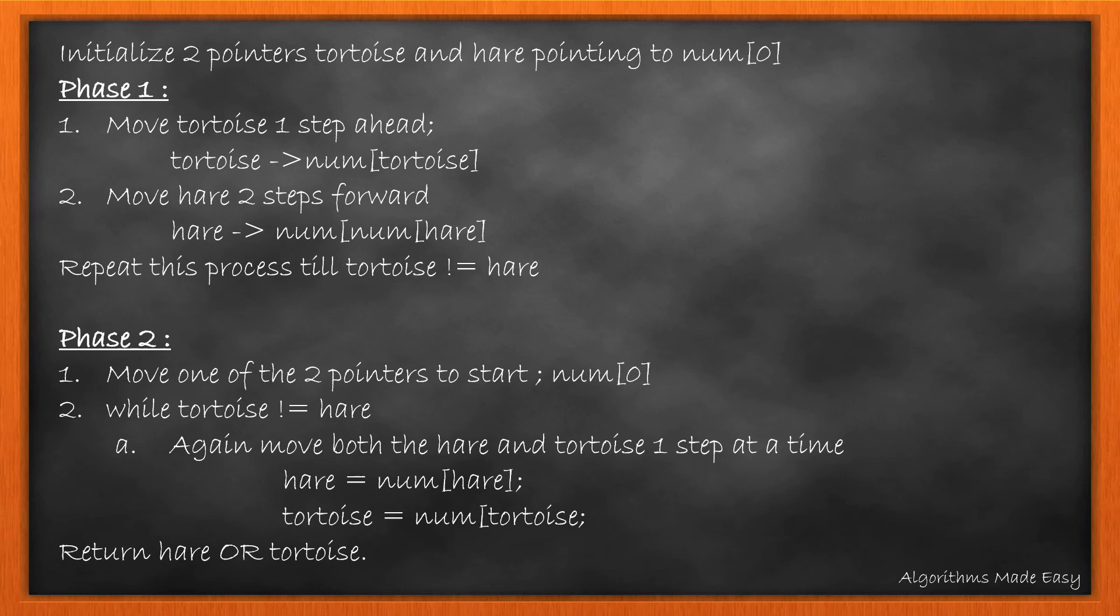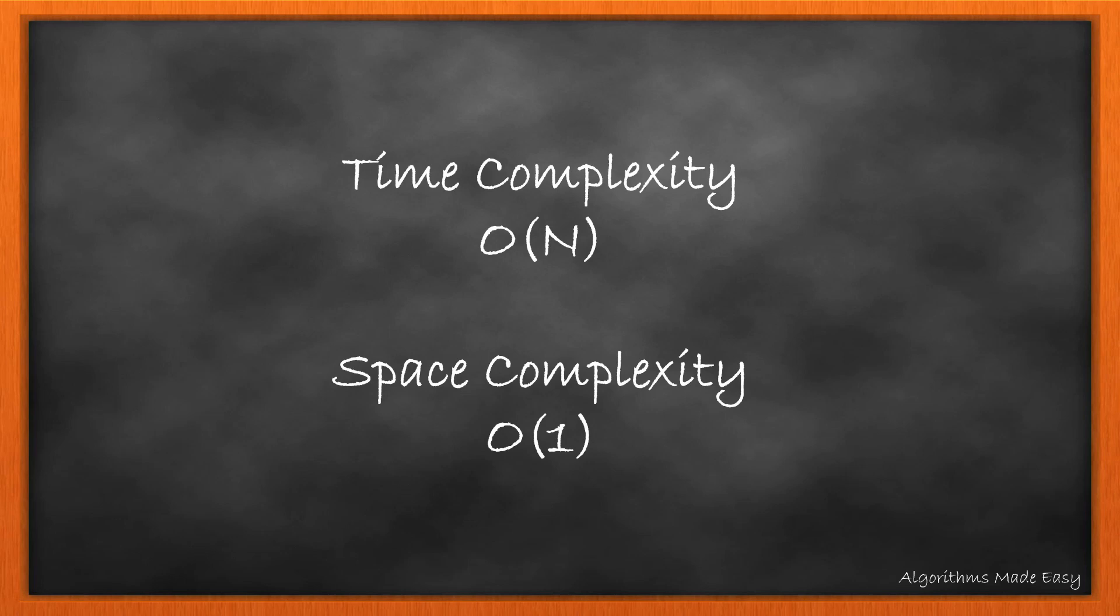Here is the algorithm. We initialize two pointers, tortoise and hare. Then, we move tortoise one step and hare two steps. We repeat this until both are equal. Then, we start finding the entry point. We move one of them back to the start and while they are not equal, we keep moving them one step at a time. Once they are equal, we return the value from any one of them as both of them hold equal values. The time complexity for this algorithm is O(n) while space complexity is O(1).